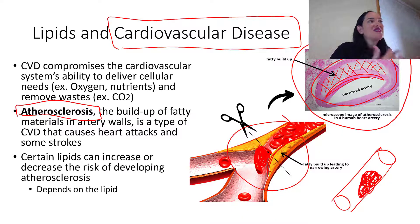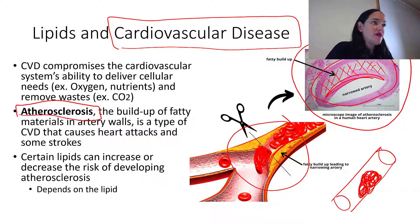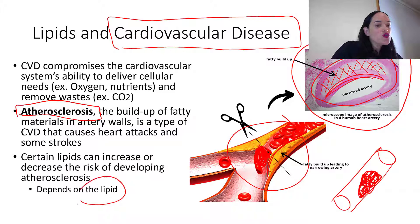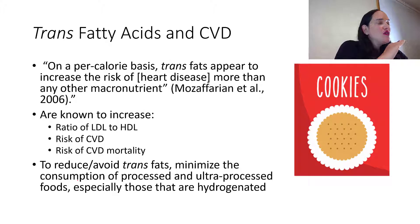Things that increase the risk of atherosclerosis are things we want to minimize: physical inactivity, obesity, and stress all increase our risk. Diet also plays a role. Diets higher in soluble fiber, plants, and whole foods are associated with lower risk. Certain lipids can also affect our risk, and that's what we're going to explore. There's lots of debate in nutrition, but there's no debate when it comes to trans fatty acids.